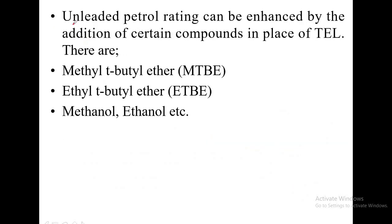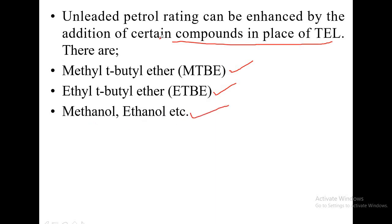For these reasons, unleaded petrol rating can be enhanced by the addition of certain other compounds in place of tetraethyl lead. These are methyl tertiary butyl ether (MTBE), ethyl tertiary butyl ether (ETBE), methanol, and ethanol. These compounds are added to petrol nowadays to increase its octane number and reduce knocking in engines, and they are absolutely lead-free.